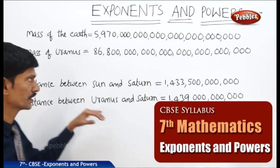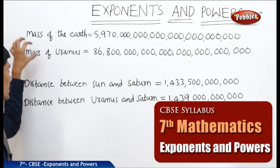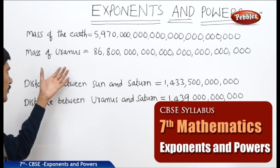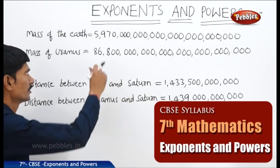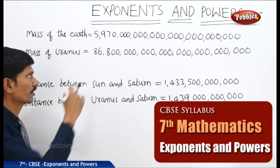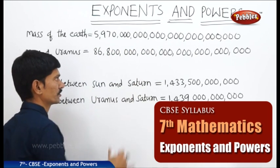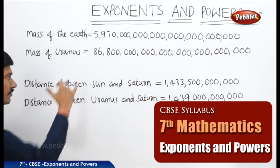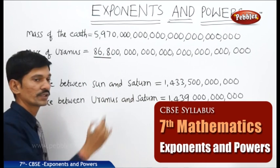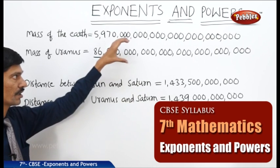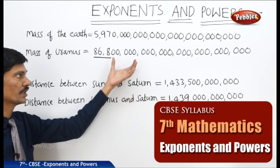Let us discuss the next topic: exponents and powers. We know the mass of the Earth and the mass of Uranus. The mass of the Earth is a very large number — after 597, there are 22 zeros. The mass of Uranus — after 868, there are 23 zeros. These larger numbers are very difficult to read.